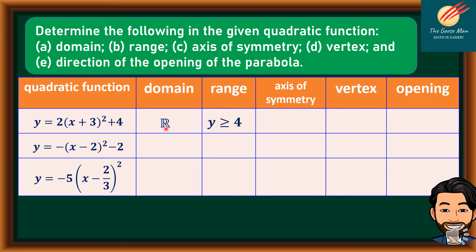The range is y ≥ 4 because it opens upward since the value of a is positive. The axis of symmetry is x = −3, because you take the additive inverse of positive 3. The vertex is (−3, 4) — take the opposite of positive 3 and copy the 4. And of course, the opening is upward.